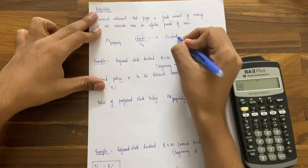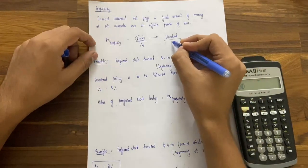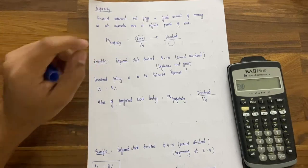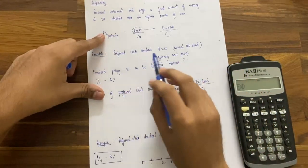For example, $8 dividend, and you are getting it every year. You will have to divide that by the periodic rate. So let us see the example.